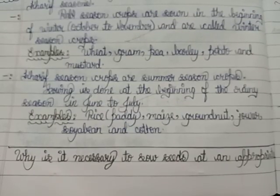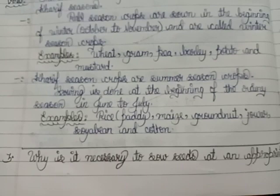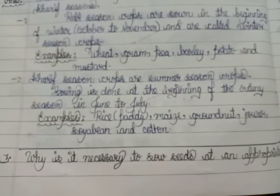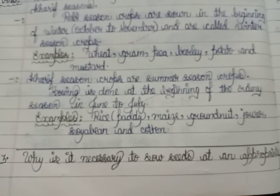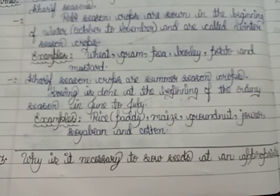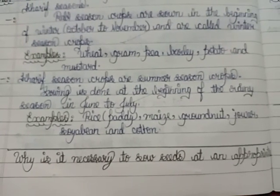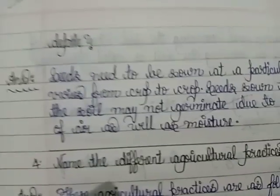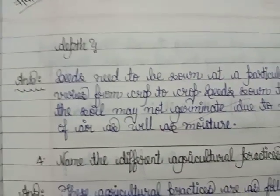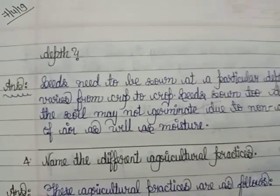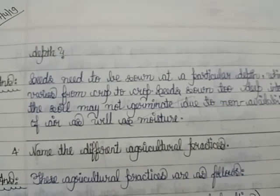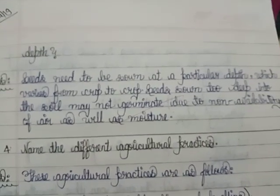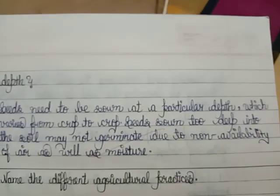Question number three is: 'Why is it necessary to sow the seeds at different depths?' The answer is given here — this is answer number three.